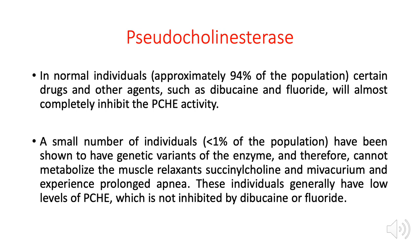In summary: a normal individual has normal pseudocholinesterase that is inhibited by dibucaine and fluoride but can break down succinylcholine. For 1% of the population with genetic variation, the enzyme is resistant to dibucaine and fluoride and cannot metabolize succinylcholine — causing prolonged apnea requiring mechanical ventilation. To differentiate this 1%, analyze pseudocholinesterase activity in their serum after subjecting the sample to dibucaine or fluoride.